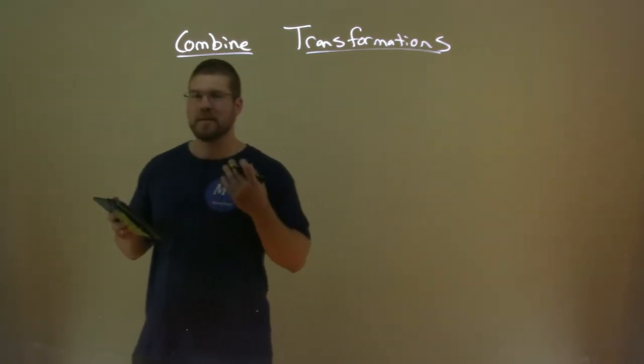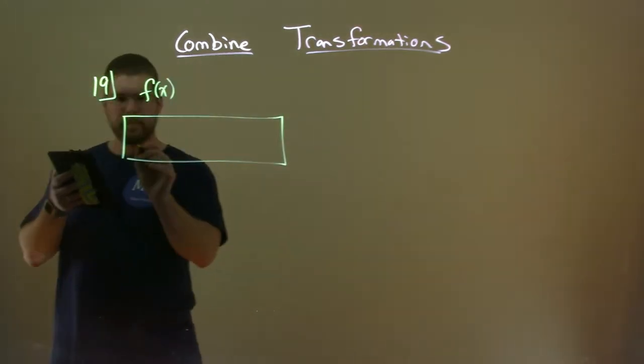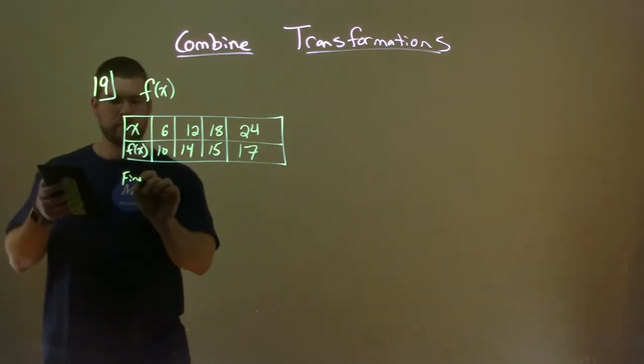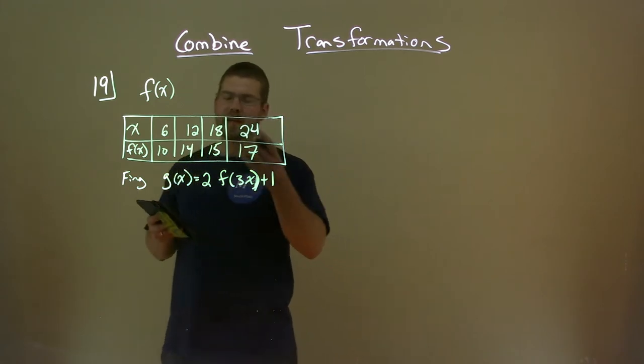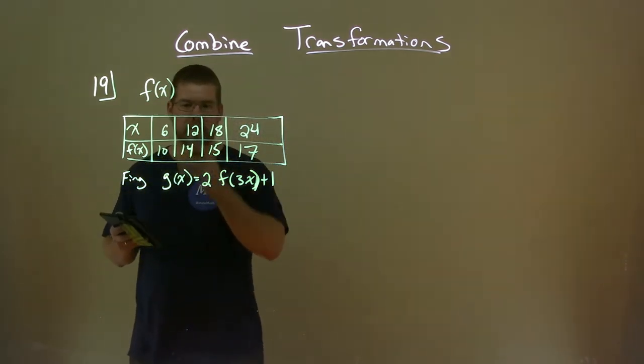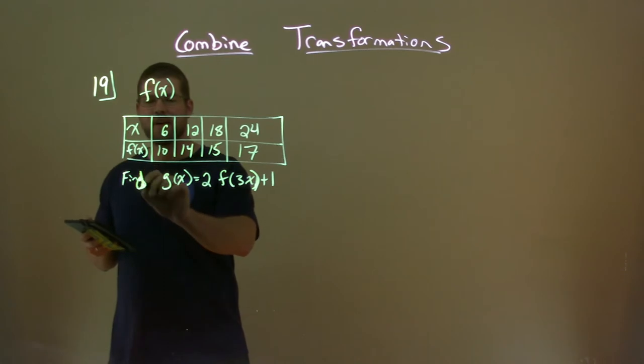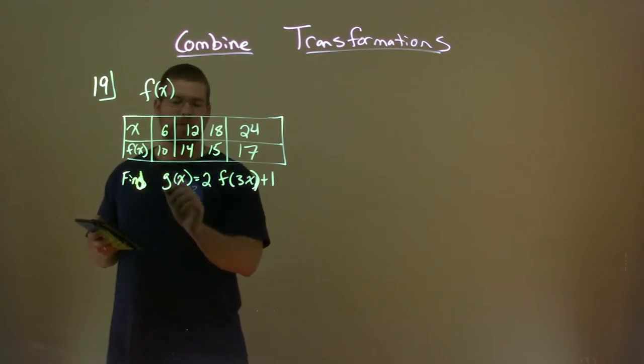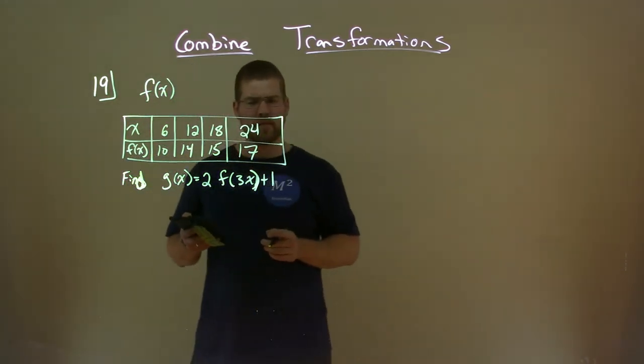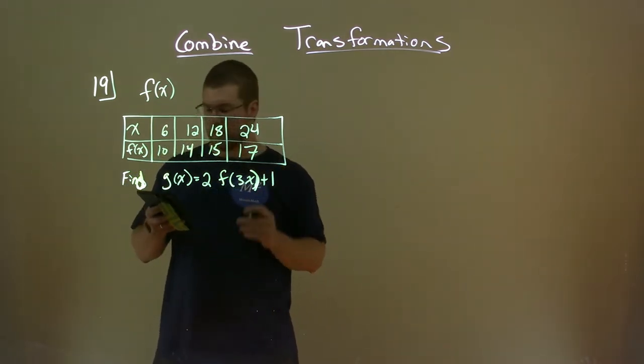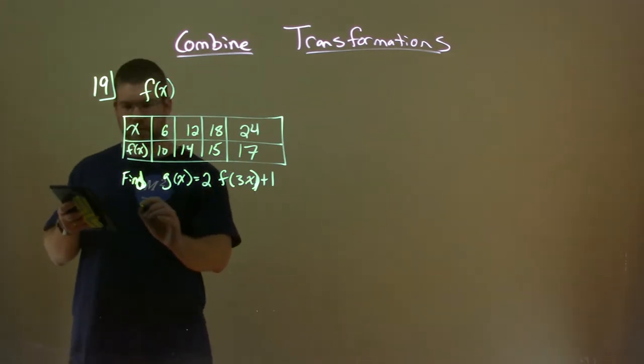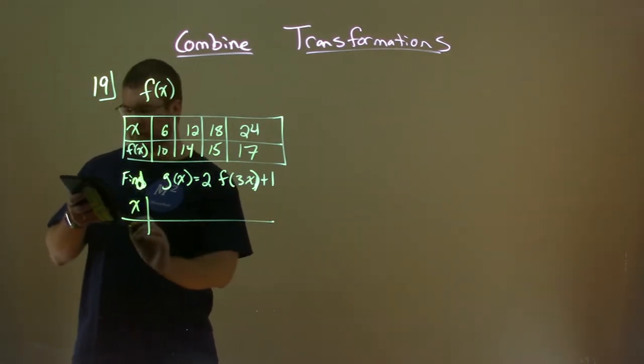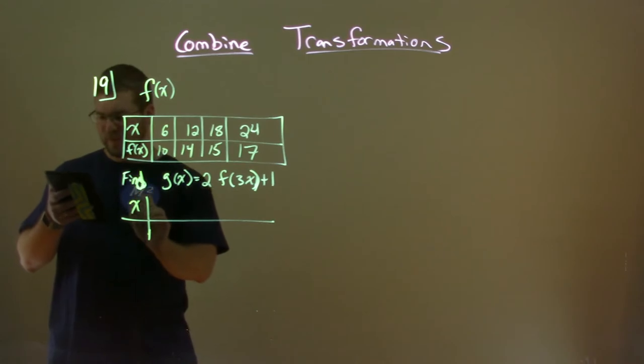So let's dive into an example here. We're given the function f(x) by this table, and we want to find g(x) equals 2 times f(3x) plus 1. We're going to break this down by steps here. Let's first put a final table for f(3x). Let's start from the inside here.